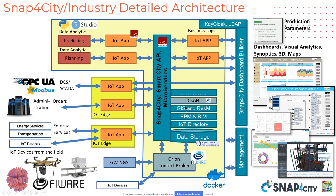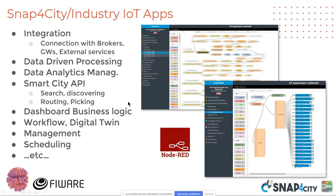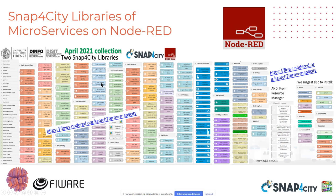The architecture has a number of containers with IoT apps for the business logic of the several dashboards, and also for managing data analytics, using a uniform programming language — Node-RED, as you see here in the slides — in which you can create data-driven processes, data analytics, exploit the Smart City API, exploit business logic in the dashboard, govern the workflow and digital twin, and manage all processes including scheduling. There is a large library of Snap4City microservices on Node-RED that you can download and install in any Node-RED, and also a large set of NGSI elements with which you can interact with the brokers to store, save, retrieve data, and interact with devices.